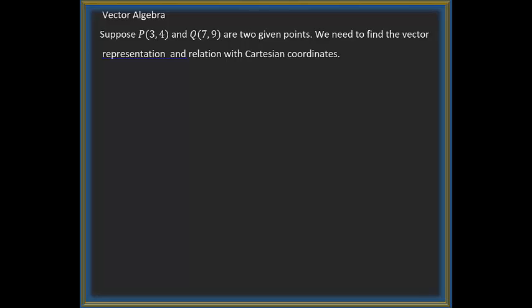In two ways we can write this vector: we can represent it as PQ in boldface or PQ with a bar. In this vector, the initial point is P and the terminal point is Q.